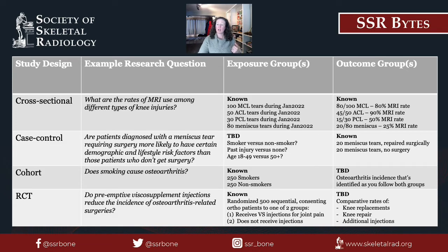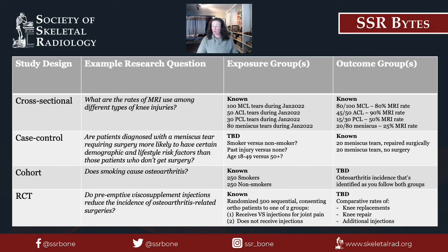Lastly, in our randomized control trial, we want to know if preventative visco-supplement injections would reduce the need for joint surgeries. This study idea isn't taking into account ethics, feasibility, or general rationality, but it's just an example. We would randomize ortho patients coming into our clinic into the treatment and non-treatment groups and then follow them forward for a period of time to determine if the injections help them avoid surgical repair.